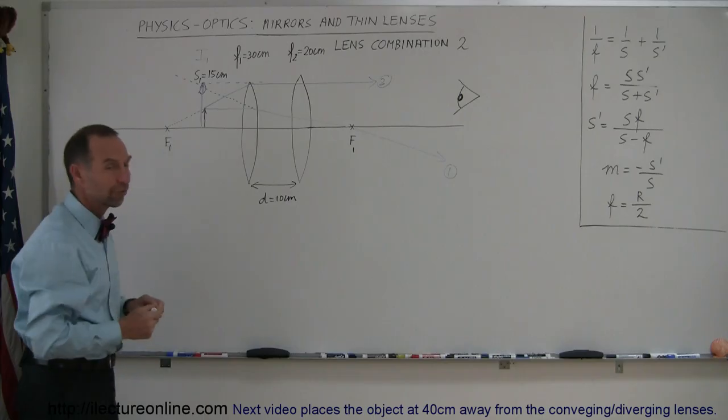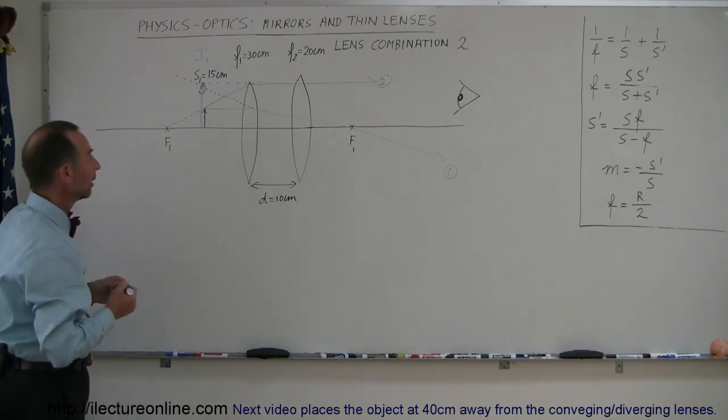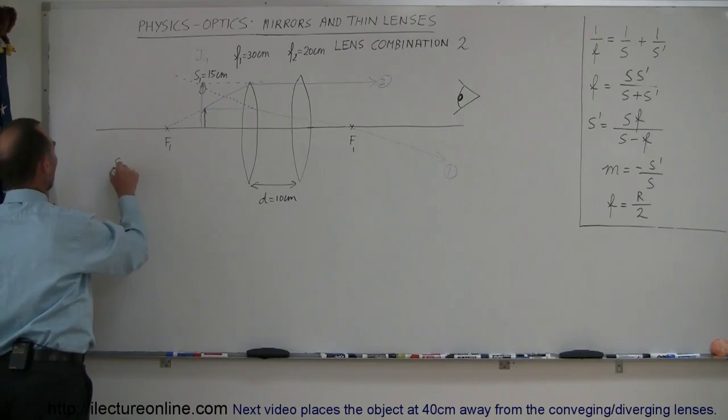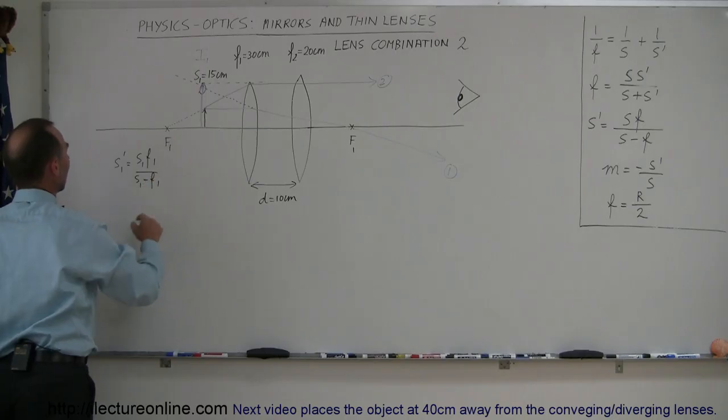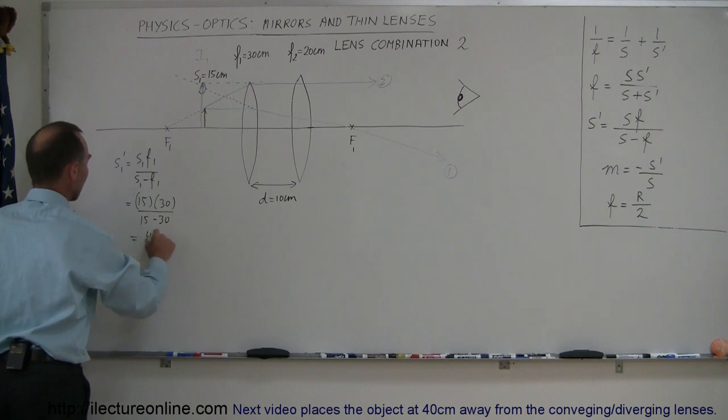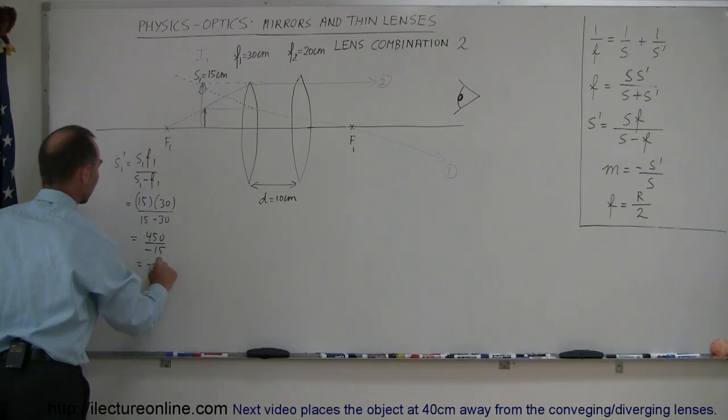So let's use our equations to find the location and the size and so forth of the first image. So we say that S1' is equal to S1 F1 over S1 minus F1, and plug in the numbers that we have here. S1 was 15 centimeters, F1 was 30 centimeters, so divided by 15 minus 30, which is equal to 450, divided by minus 15, which is equal to a minus 30 centimeters.